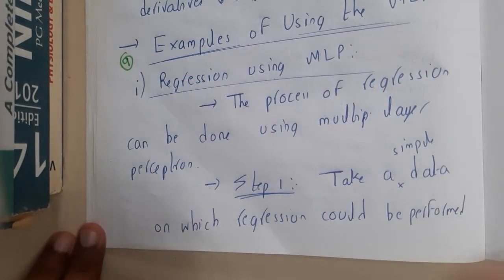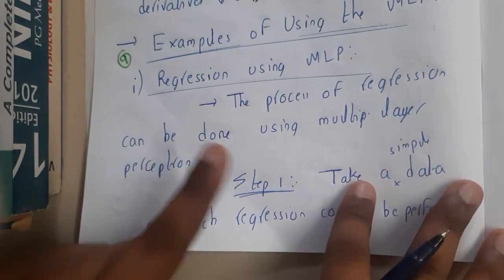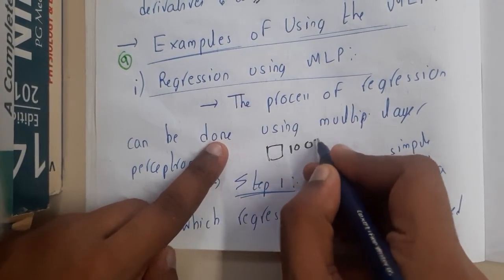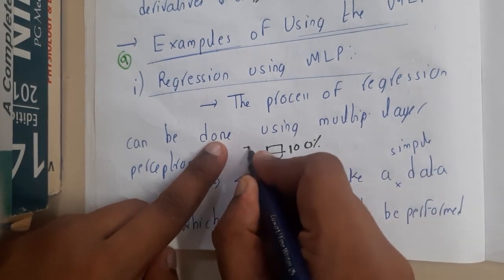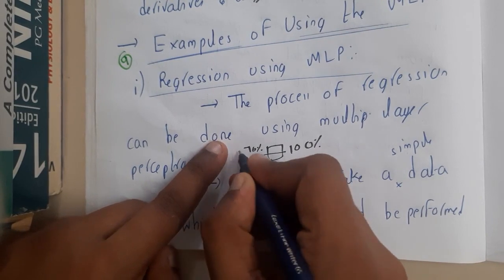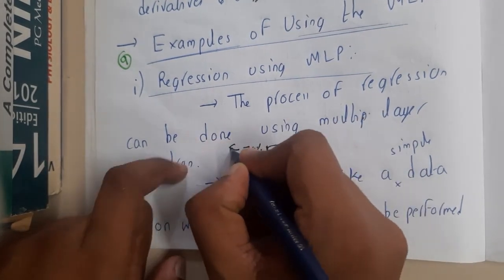The first step will be taking the whole data. If it is 100 percent data, you will be dividing it into two parts. The first part will be your 70 percent part and the second part will be 30 percent. This is your training data and this is your test data.